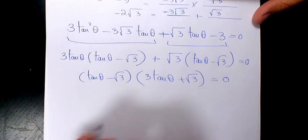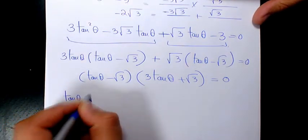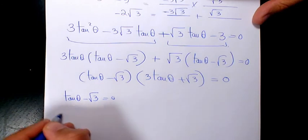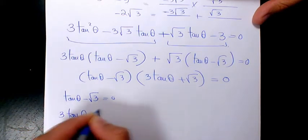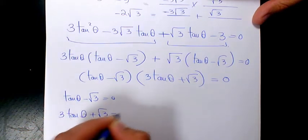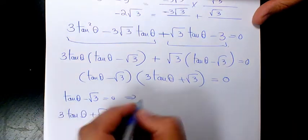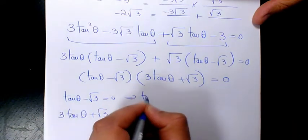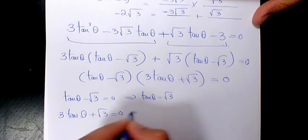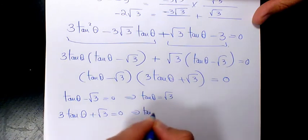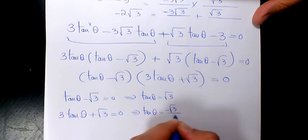Since these two expressions equal zero, we say either tan theta minus root three equals zero, or three tan theta plus root three equals zero. The first one gives tan theta equals root three, and the second gives tan theta equals negative root three over three.